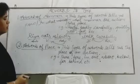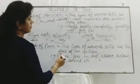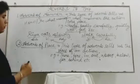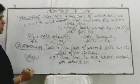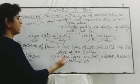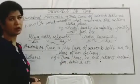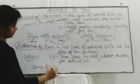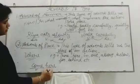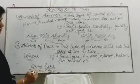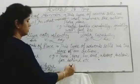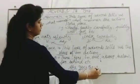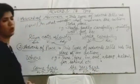The next type is adverb of place. This type of adverb tells us the place of an action, or gives the answer of 'where.' Examples include: there, here, in, out, above, below, far, behind. For example: 'Come here.' Here, 'come' is the verb and 'here' is the adverb of place. Another example: 'She goes there.' Here 'goes' is the verb and 'there' is the adverb, modifying the verb.